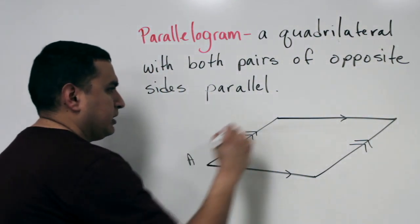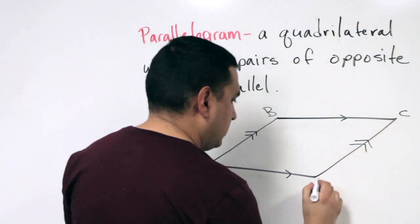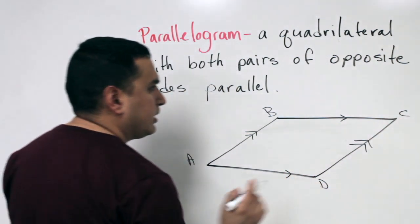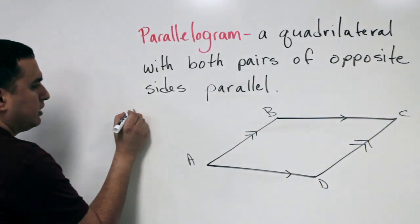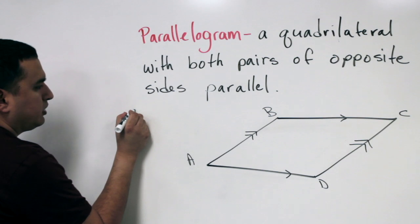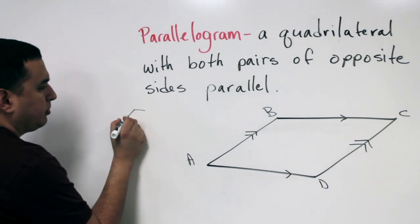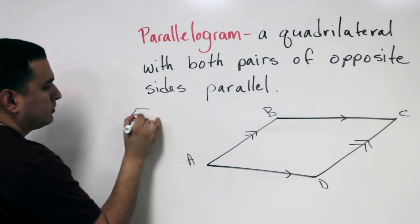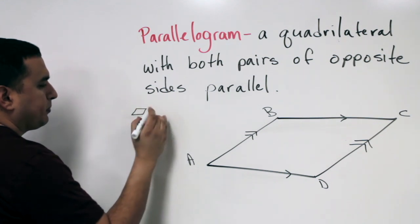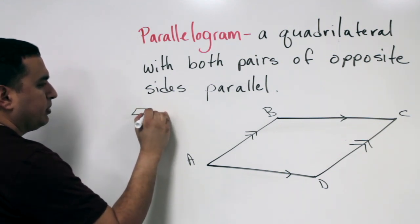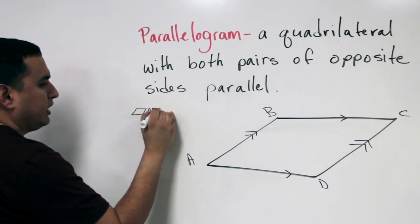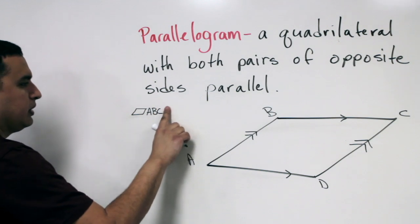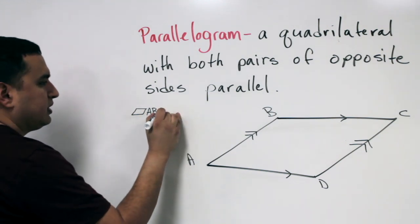You could name it ABCD, and when we're writing it, we usually draw a little smaller parallelogram-type shape, and then put just the letters for the vertices. So this would be parallelogram ABCD.